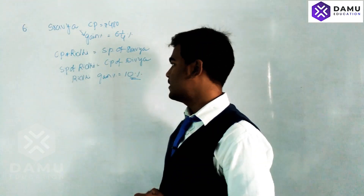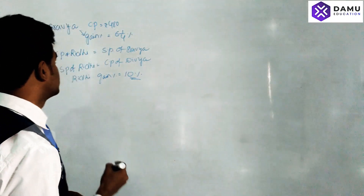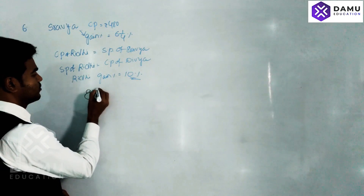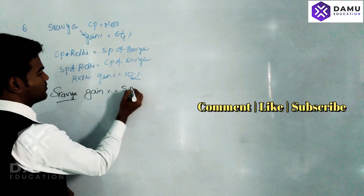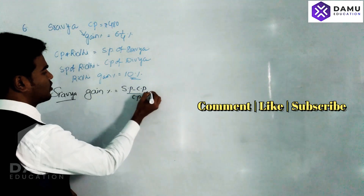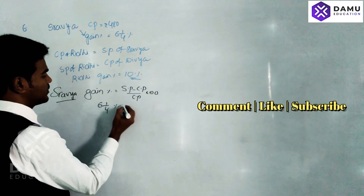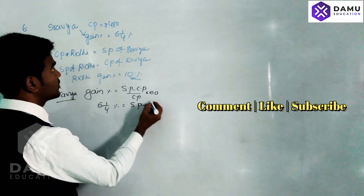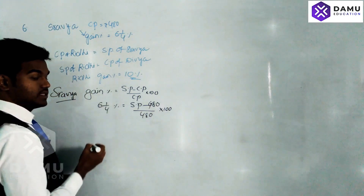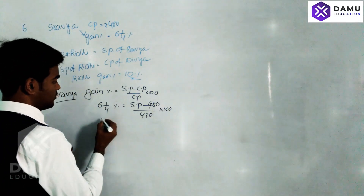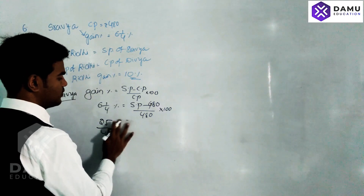Based on that, we are going to find the selling price. The cost price is given and the gain percentage is given. Shravia's gain percentage formula: selling price minus cost price, divided by cost price, into 100. Cost price we know is 480, gain percentage is also known as 6¼%, which is 25/4%. Selling price is unknown.